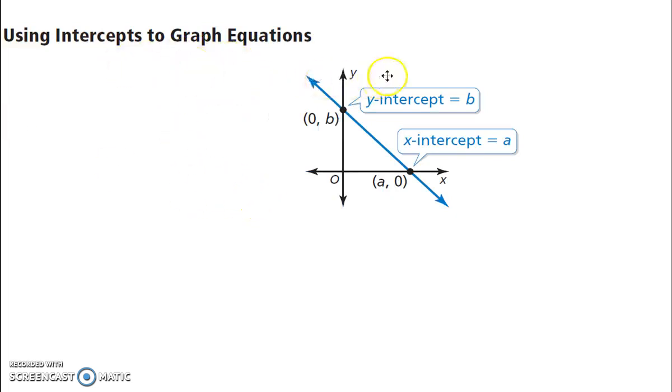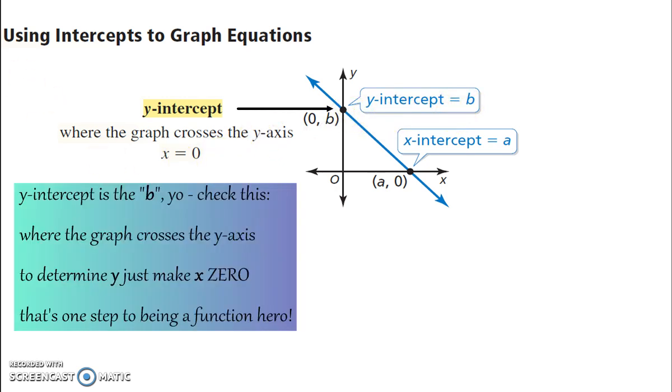All right, using intercepts to graph equations. So, where it crosses the y-axis, that's the y-intercept, this point right here where x is 0 and then the y-value is B. So, the y-intercept is B. Remember, we learned this. Y-intercept is B. Yo, check this. Where the graph crosses the y-axis to determine y, I just make x 0. That's one step to be in a function here. So, if x is 0, we make x 0, we get the y-intercept.